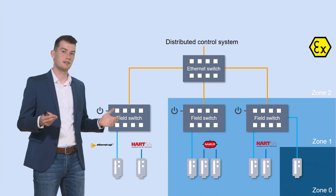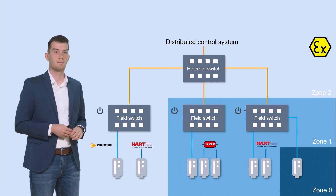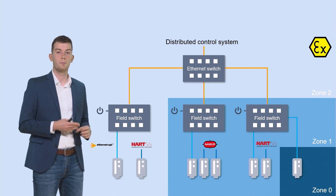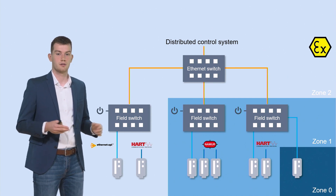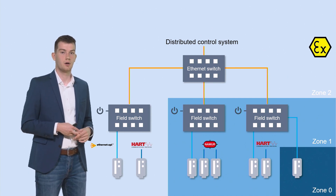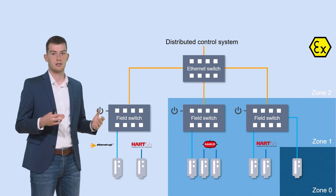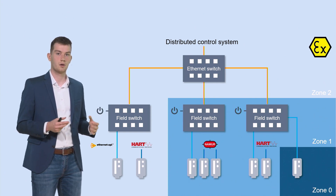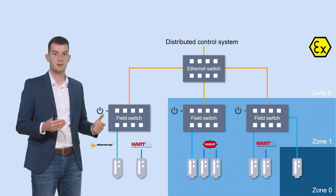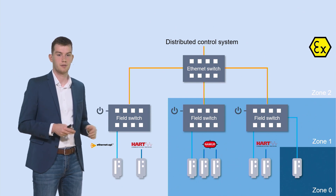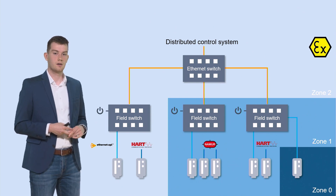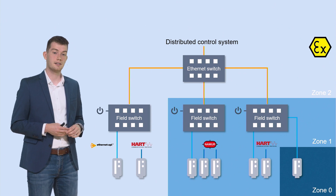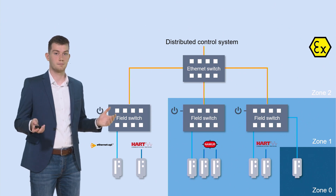In addition, really simple digital inputs, for example, won't be converted into Ethernet APL because it does not make sense — we do not have any more data than just a digital input. So in this field switch architecture, these signals just fall aside.